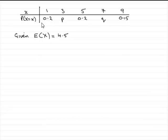Now we're given the probability distribution of our random variable x and also given that E(X) equals 4.5.